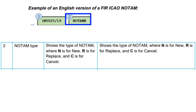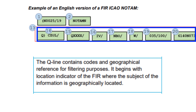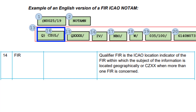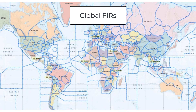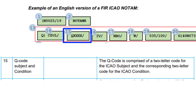Up next is the qualifier line. The qualifier line will always contain the following fields separated by a slash. The first four letters in your qualifier line is going to be the flight information region — basically the center controller responsible for the airspace in which your NOTAM is published. Up next is the queue code. The first letter is a Q. The second and third letters identify the subject being reported, and the fourth and fifth letters identify the status of operation of that subject.